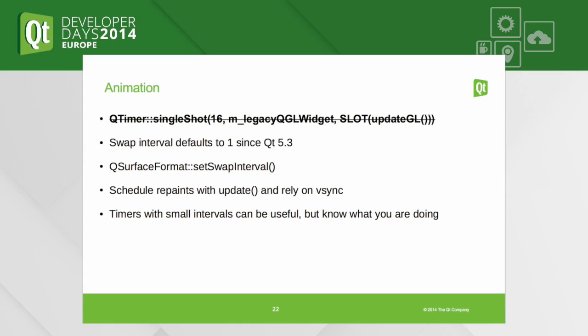Timers with small intervals — say 1 to 5 milliseconds — do have their uses: Qt Quick does that internally in some cases to give time to the event loop to process a large number of incoming events. Still, know what you are doing if you are using timers.